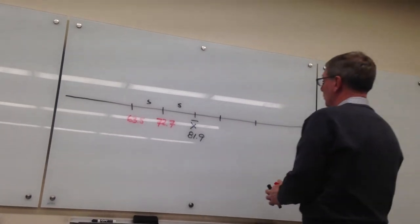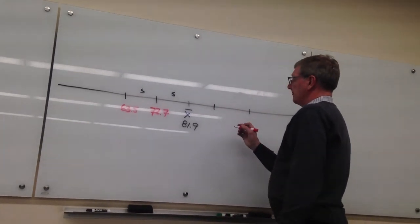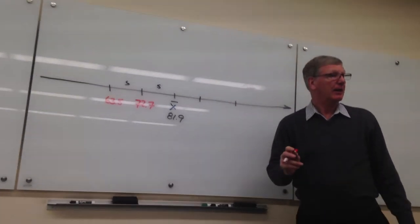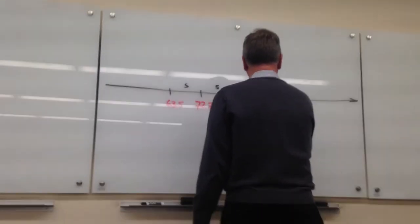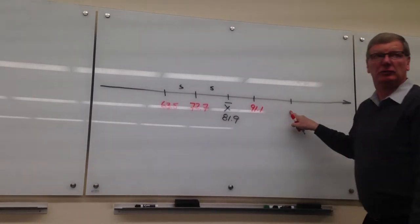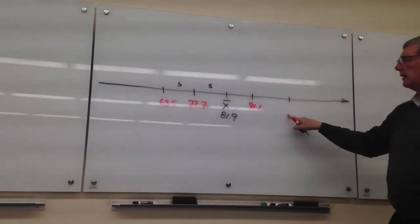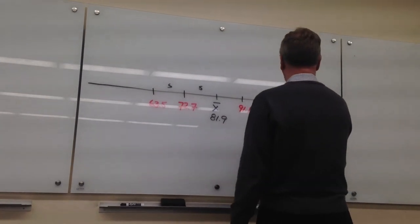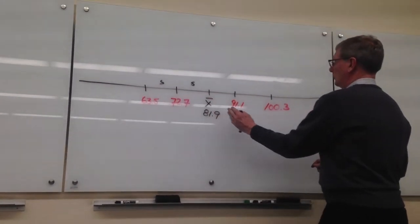All right, so now let's go to the right. What's the next one if I go one to the right? 91.1. And what's the next one, sir? 100.3. Okay, so this is two standard deviations to the left and two to the right.